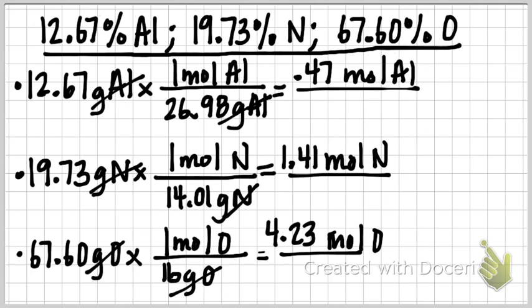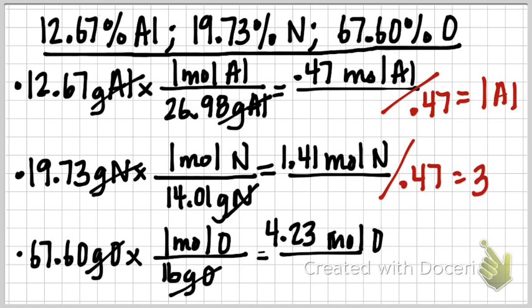I'm going to find my smallest number. My smallest number is 0.47. That gives me 1 aluminum. Then, I'm going to divide 1.41 divided by 0.47, that gives me a straight up 3 for nitrogen. And 4.23 divided by 0.47, that gives me 9 oxygens. When we rewrite this, we have 1 aluminum, 3 nitrogen, and 9 oxygen.